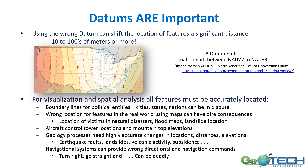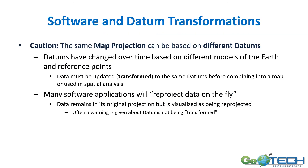Navigation systems in our cars can be very dangerous if they give us the wrong direction. Software and data transformations can occur, so be cautious: the same map projection can be based on different datums, they can change over time, and the data must be transformed.